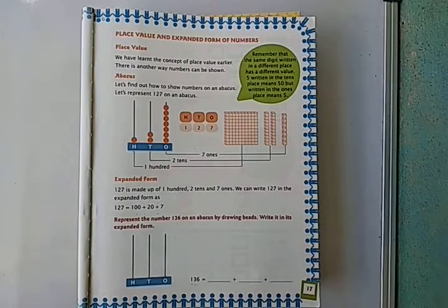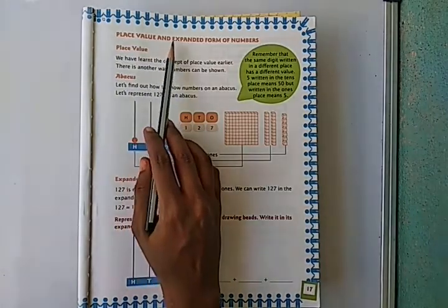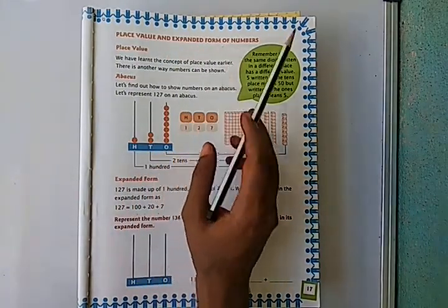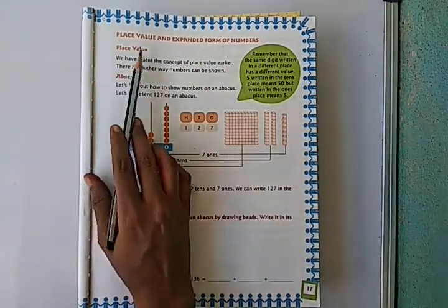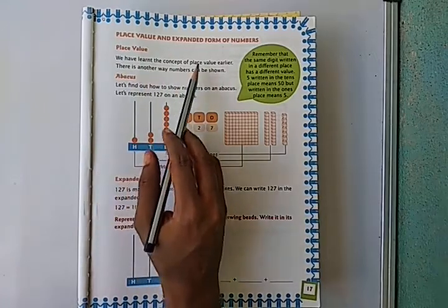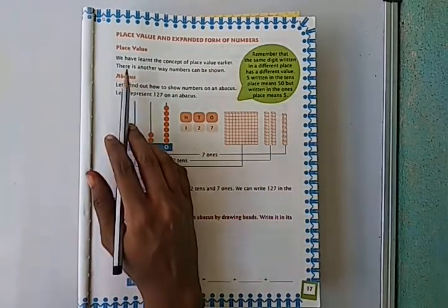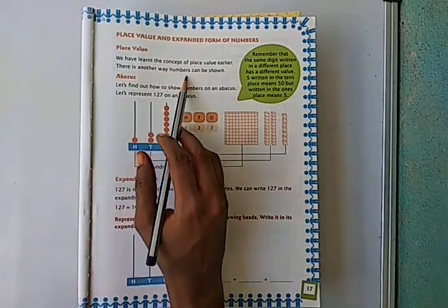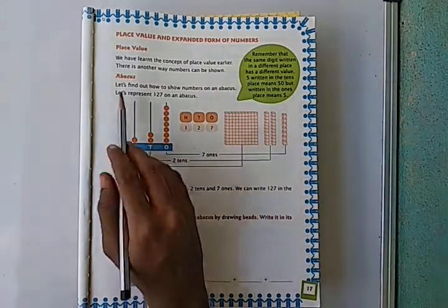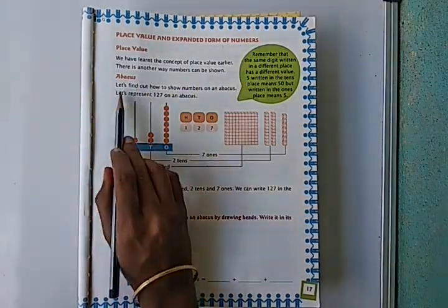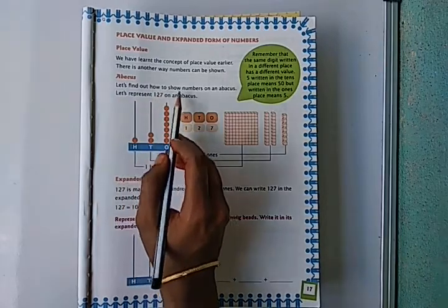This is your next topic: place value and expanded form of numbers. We have learned the concept of place value earlier. There is another way numbers can be shown on an abacus. Let's find out how to show numbers on an abacus.